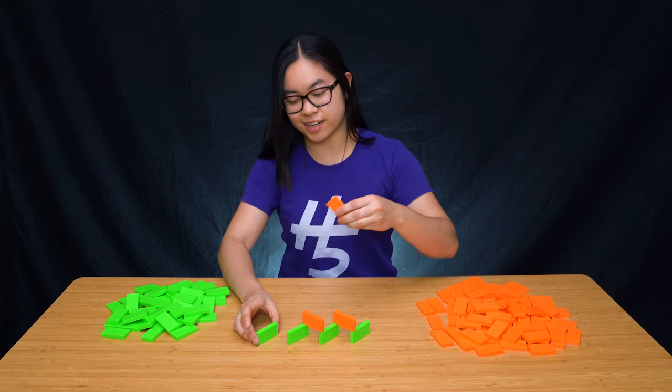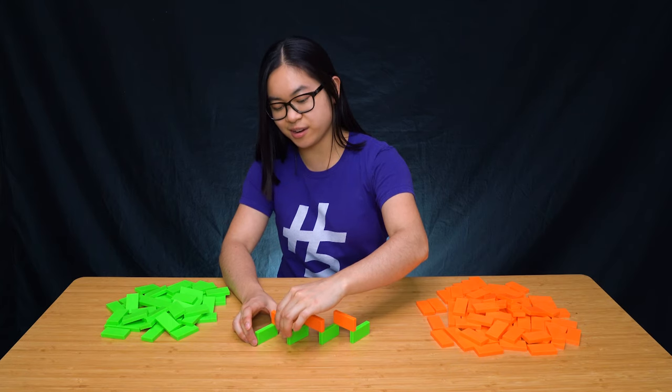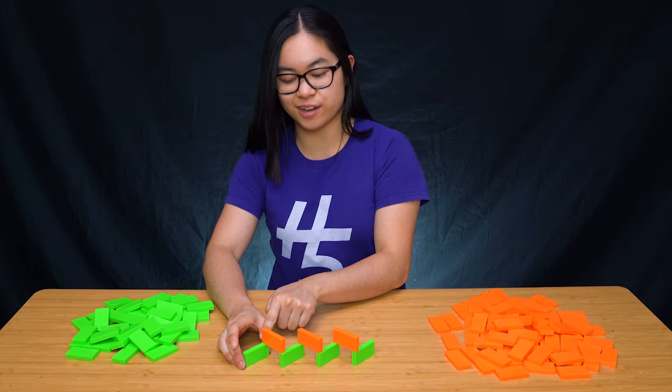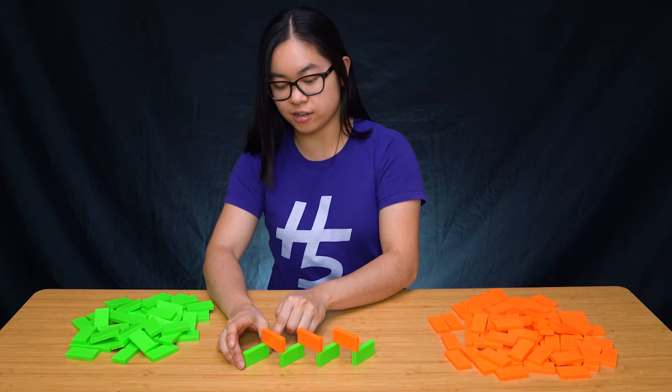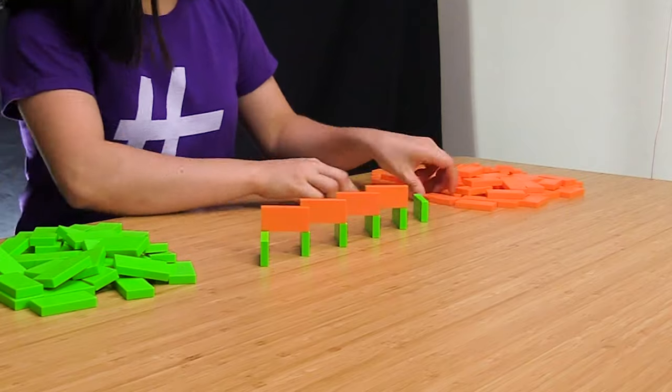I like to do the first and second layer together instead of just doing the first layer, because the second layer is almost like my guide for knowing where to place the domino that's going to go underneath it. So I'm just going to continue making a line like this.